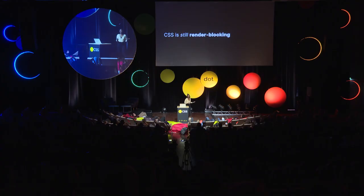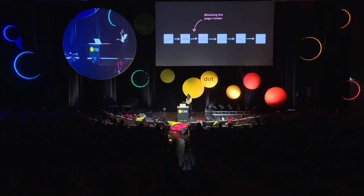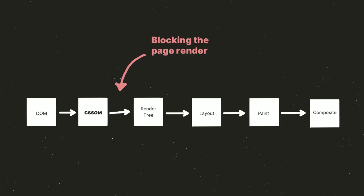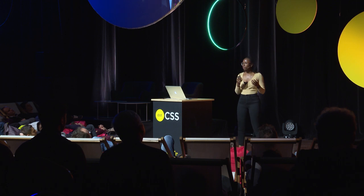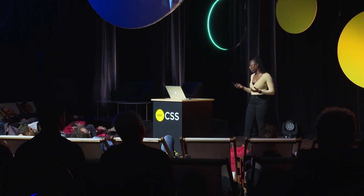Another thing to note is that CSS is still render blocking. What this means is that when a document is loaded in the browser, it needs to go through all these steps before anything is displayed on the page — first we build the DOM, then the CSSOM, and those are put together to build the render tree. That means that if we want our page to load as quickly as possible, we want the lightest amount of CSS as possible. There are a few ways for us to get around this render-blocking nature of CSS.